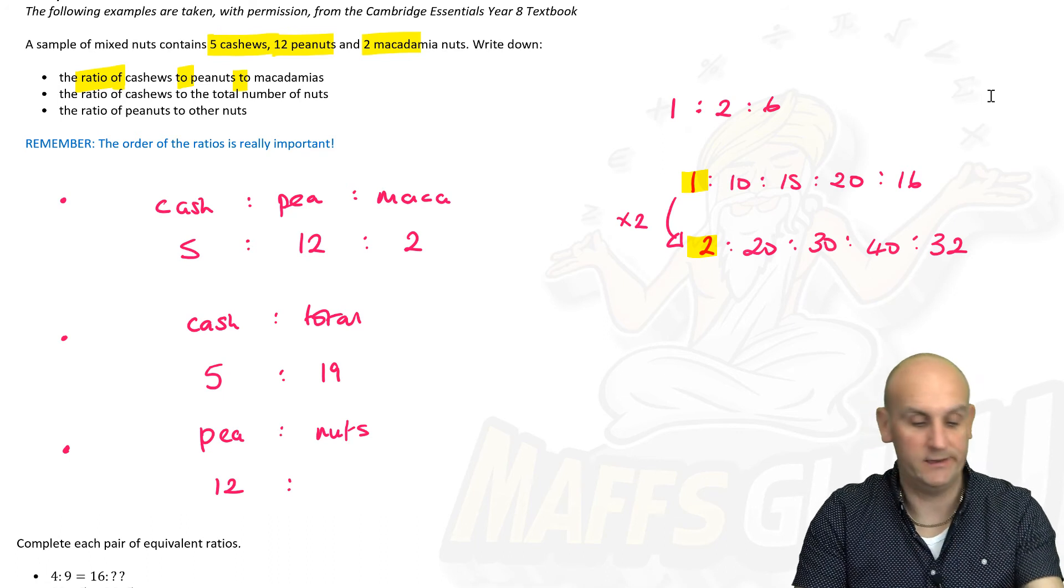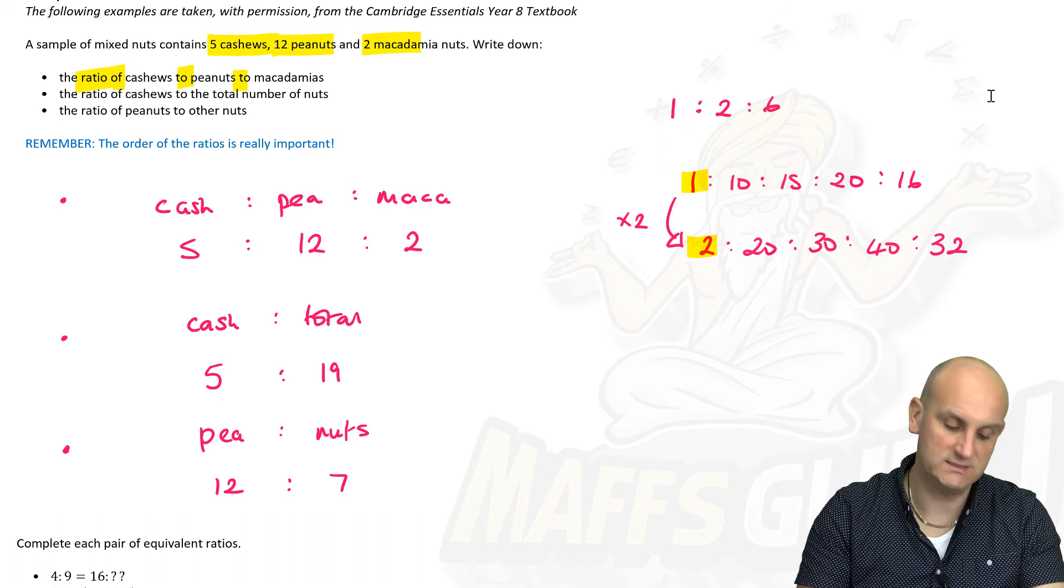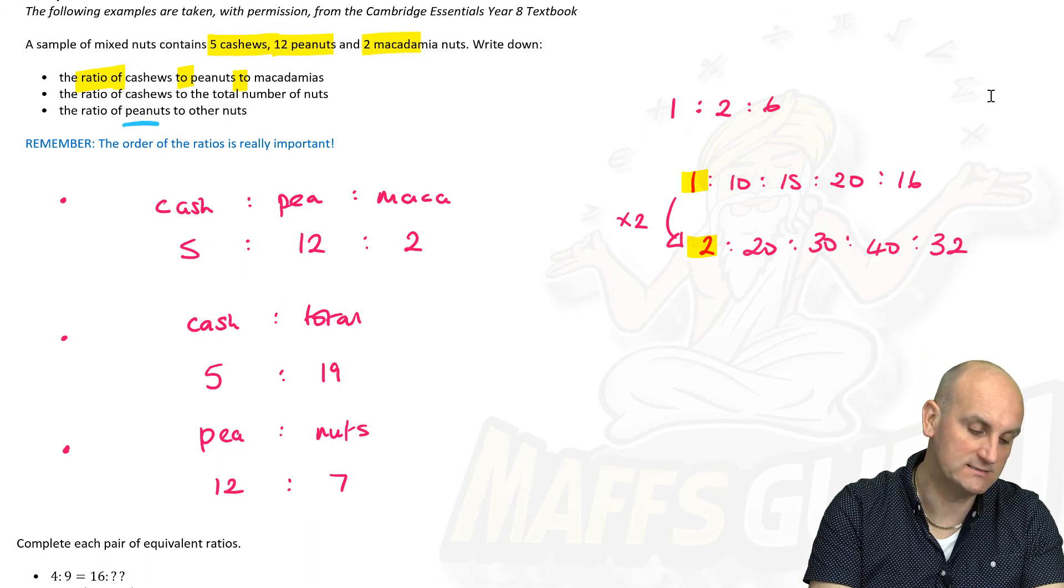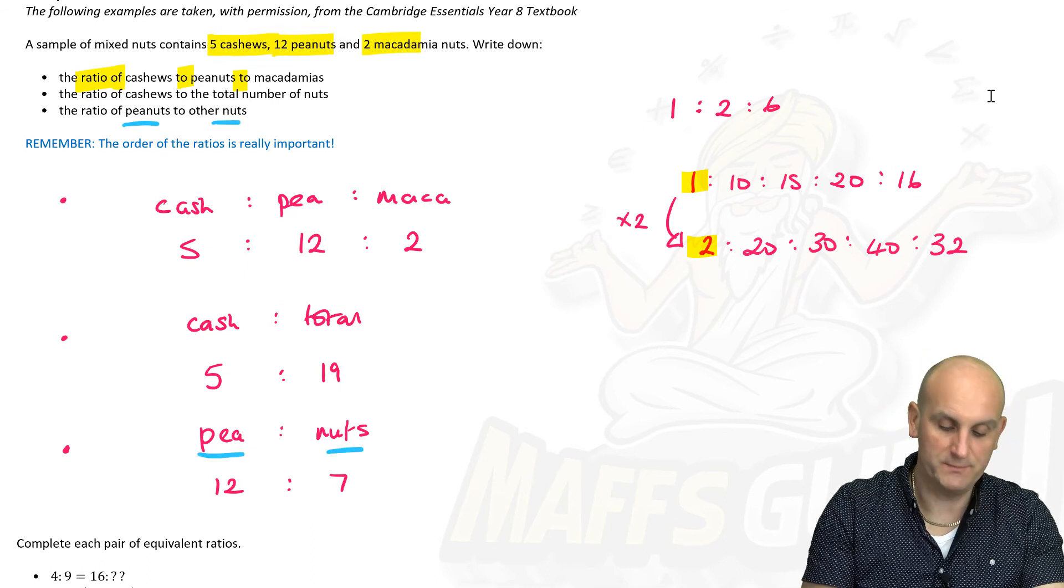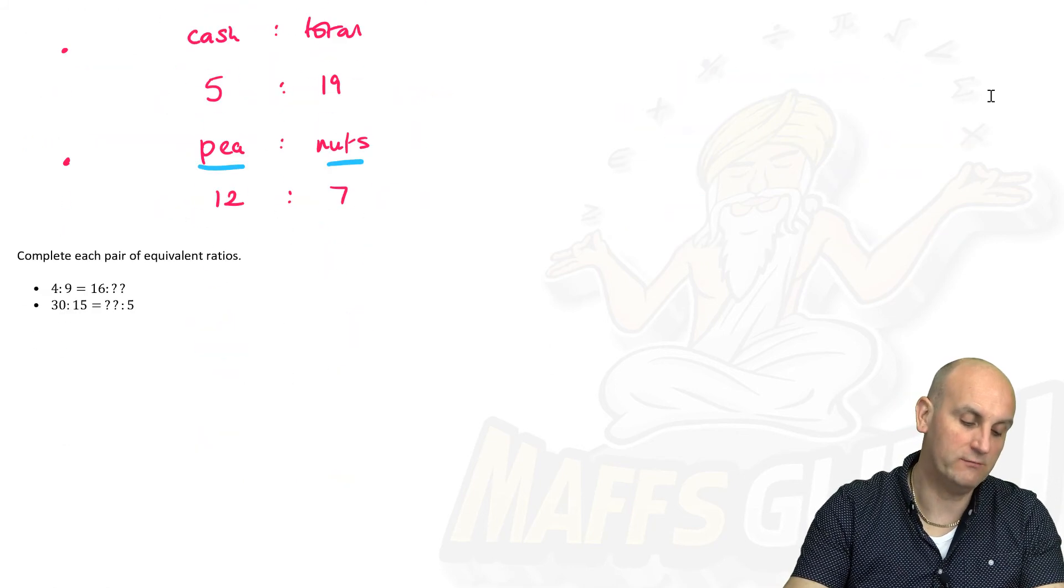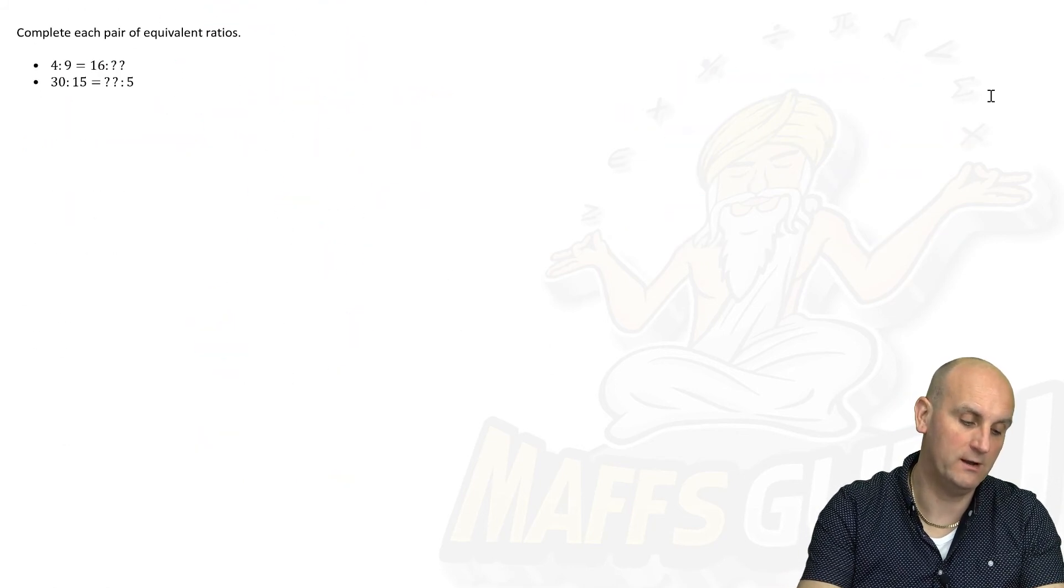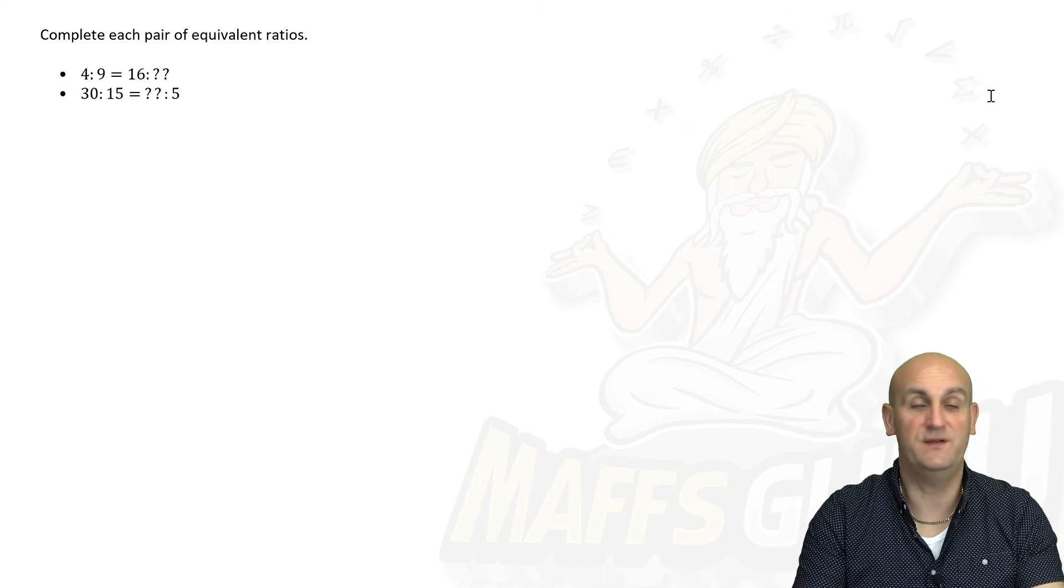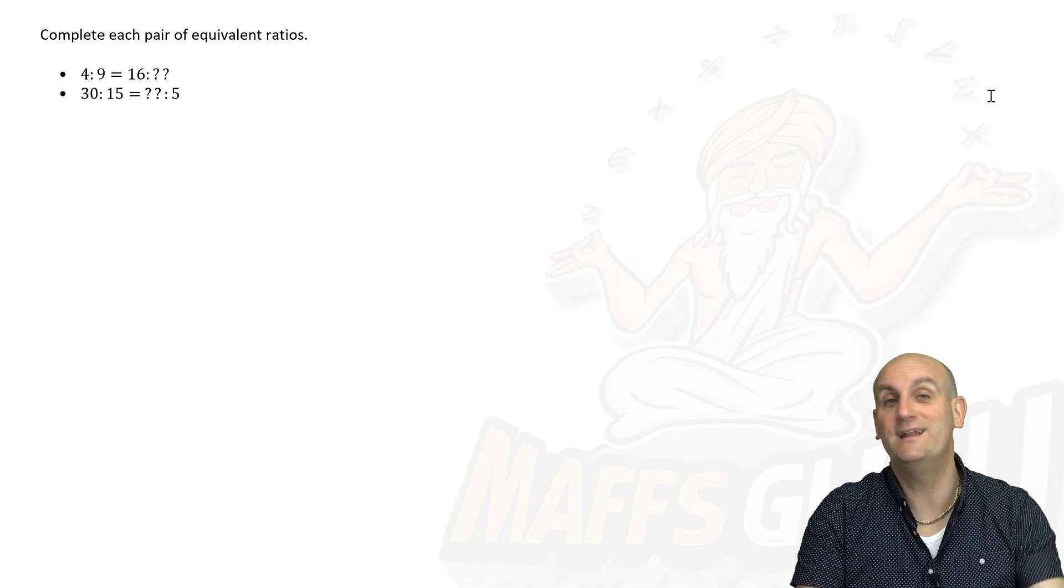The ratio of peanuts to other nuts. Oh, tricky question! Peanuts to other nuts. So peanuts, there are twelve. Other nuts, so that means everything that's not a peanut, there's five plus two which is seven. And that is my ratio. And again, the order was critically important there. Notice peanuts, other nuts. My order was peanuts to other nuts. If you get those the wrong way around, you're in all sorts of trouble.